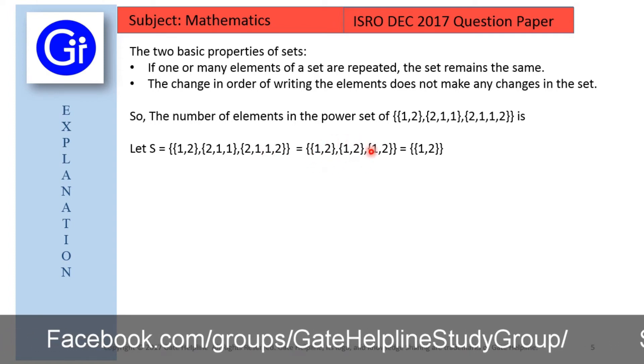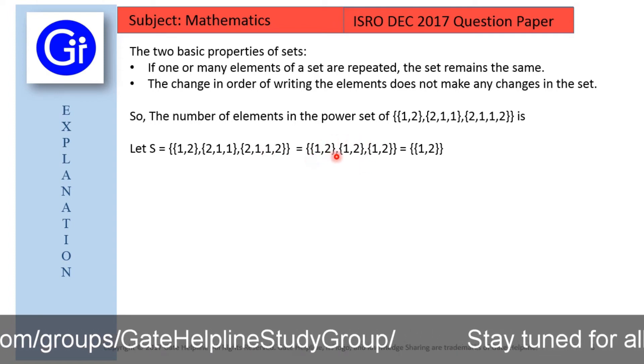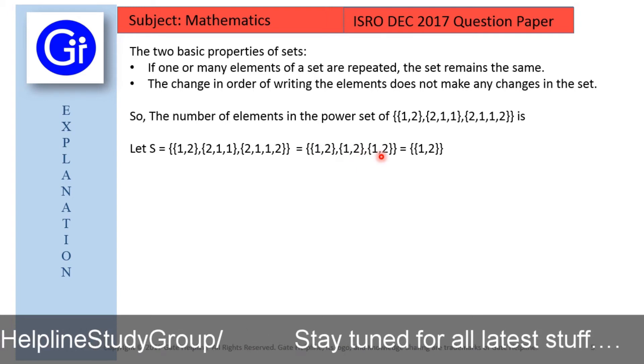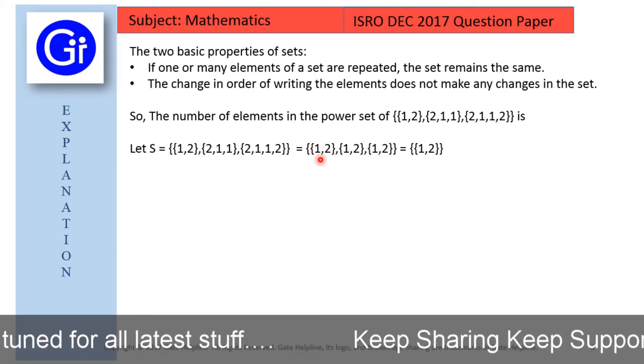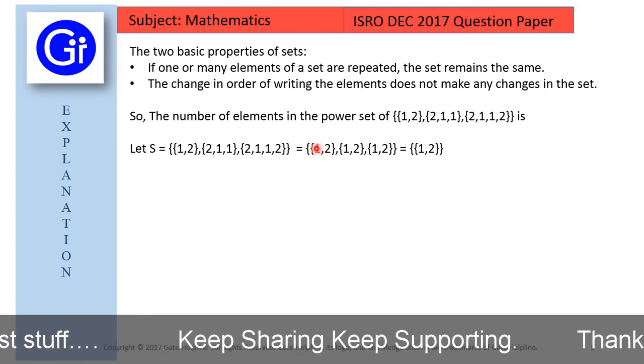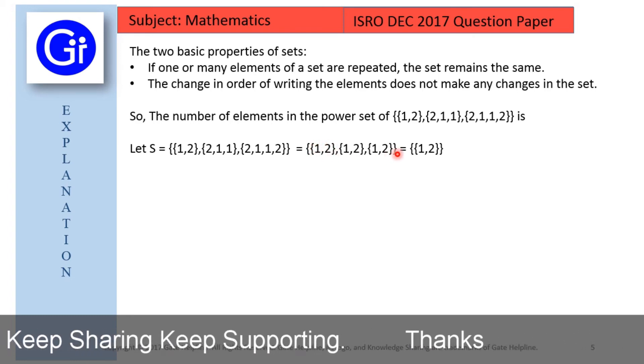So we can rewrite it as in this form that is {1, 2}, {1, 2} and {1, 2}. So now in this form also you can see that this set {1, 2} entire this set is repeated in the bigger set three times.